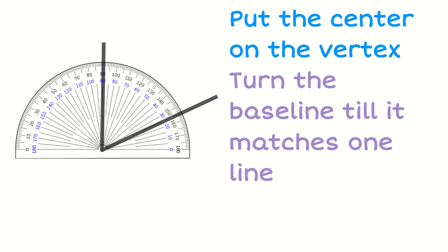Now we want to turn our baseline until it matches one of the two lines. I'm going to take my baseline of my protractor, which I've just drawn there in red for you. That's my baseline, the 0 to 180 degree line.